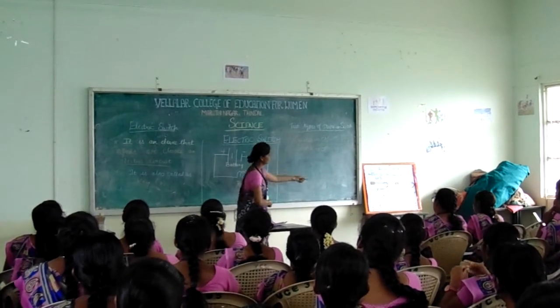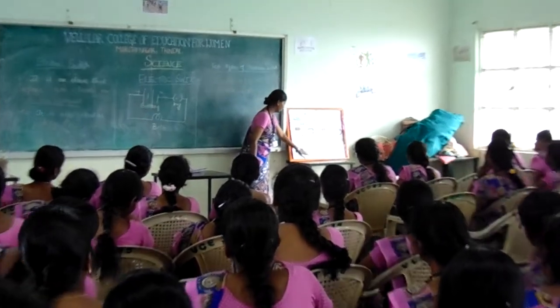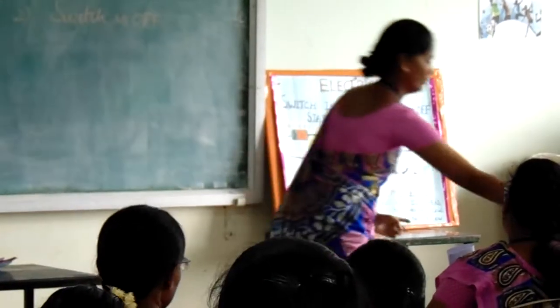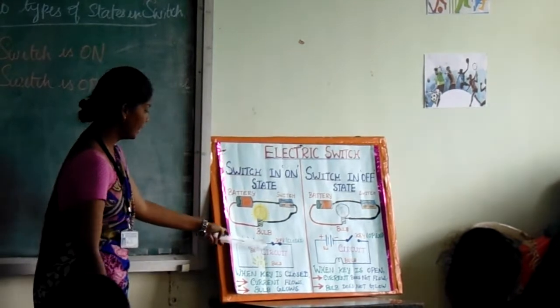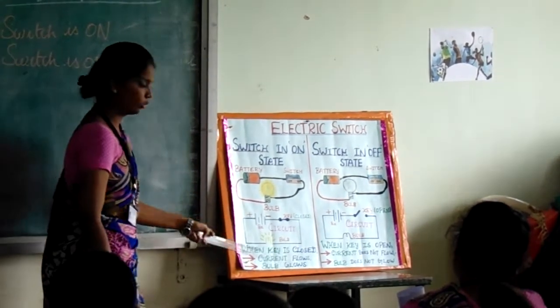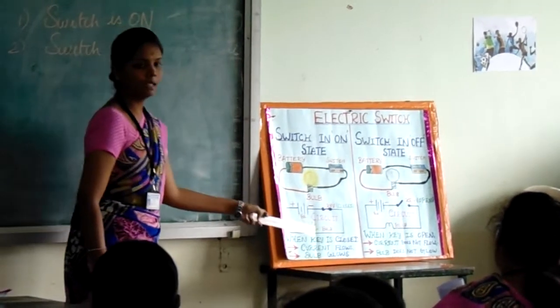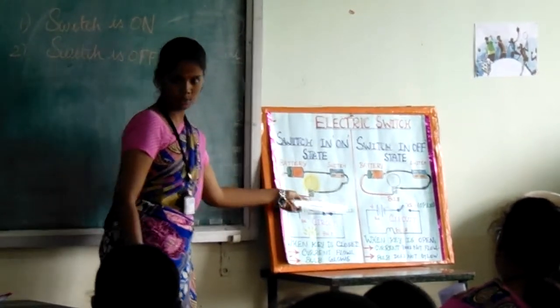We can represent this by a diagram. See this chart — see the first diagram. It is switched on. See the circuit: it comes from battery, key, and bulb. See the symbol of the key — the key is closed here. When the key is closed, the current will flow in the circuit and the circuit is complete. So the current flows through the circuit and automatically the bulb will glow. When the key is closed, the switch is in the on position.